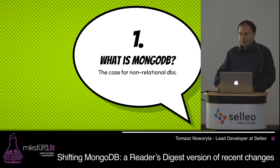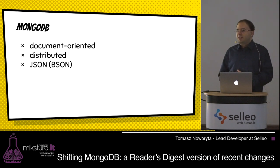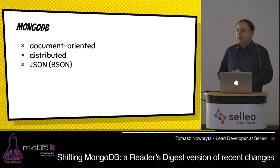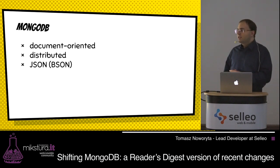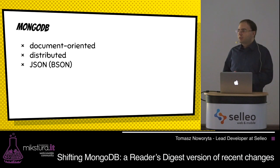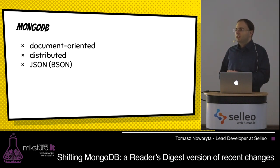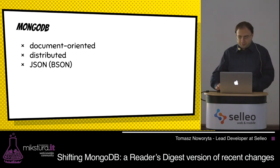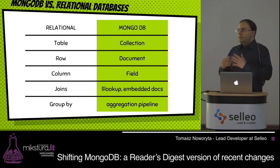MongoDB is a database that is document-oriented, meaning that all the records — here called documents — are stored as JSON objects. There is not really a schema; everything is stored as JSON. Under the hood it uses not only pure JSON but actually a special implementation called BSON — the Binary Serialized Object Notation — which helps with additional types, extends JSON, and provides better serialization and deserialization.